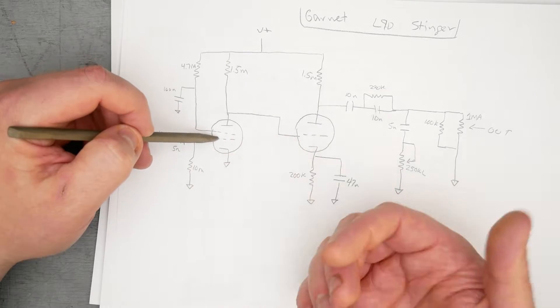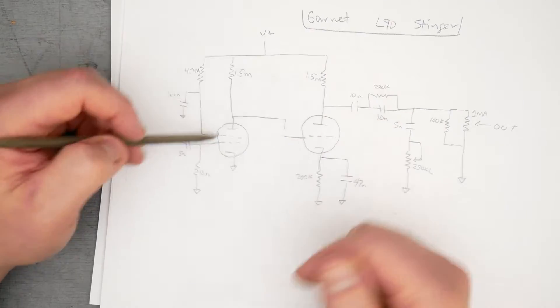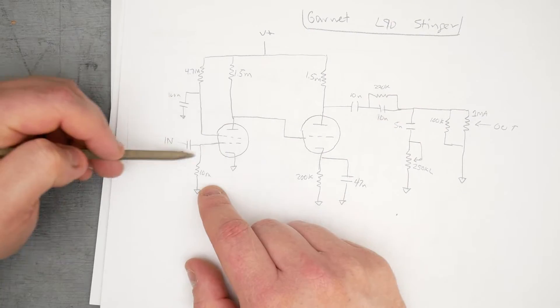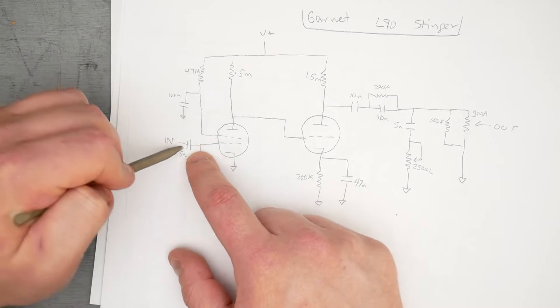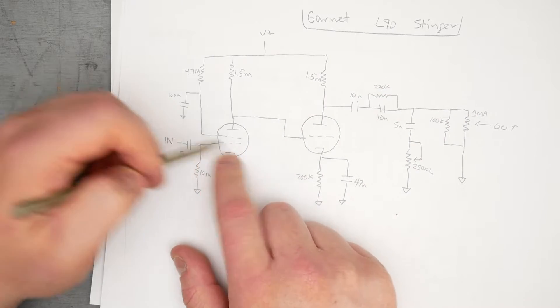Those electrons would want to escape out from the grid connection to ground through a smaller grid leak resistor, but in this case we have a big 10 meg which is going to cause a sort of blockage of electrons on the control grid, which is then going to negatively bias the control grid relative to cathode. That's how bias is built here.